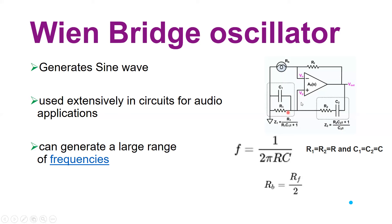If you imagine removing the RC network from the circuit and connecting the positive terminal to ground, you have a simple inverting operational amplifier. Applying input to the negative pin, with the Rf and Rb combination, the output is minus Rf over Rb multiplied by the input — a linear inverting amplifier configuration.